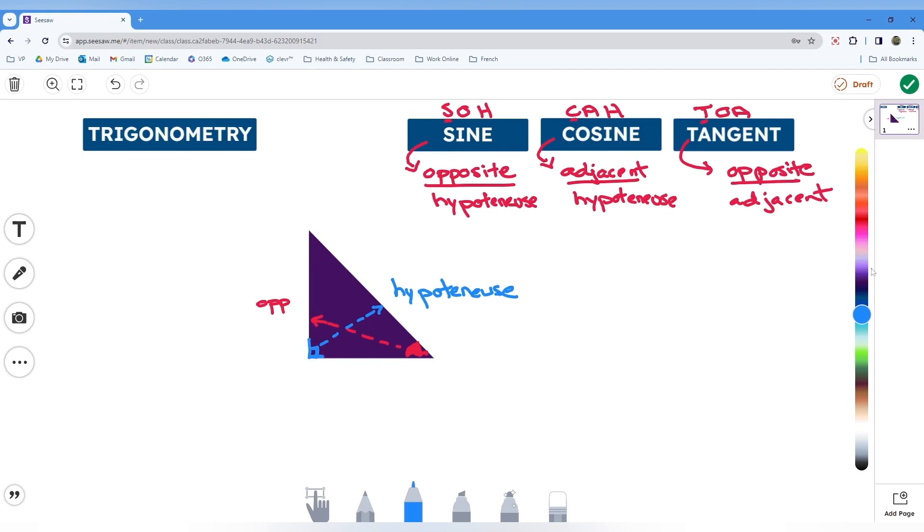Now, the other side is going to be our adjacent side. Adjacent means beside, so it's right beside the angle that we're looking at.